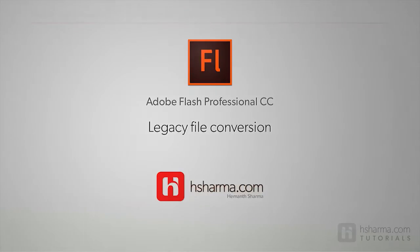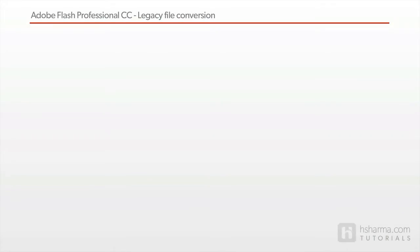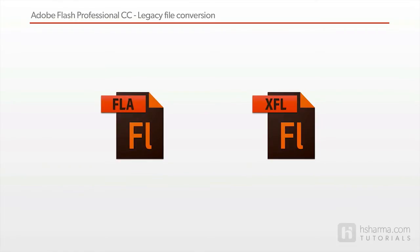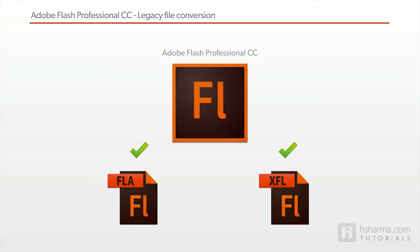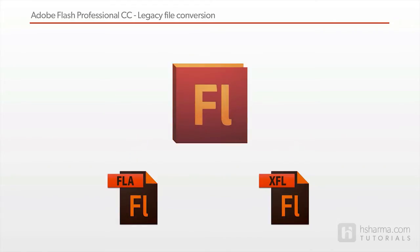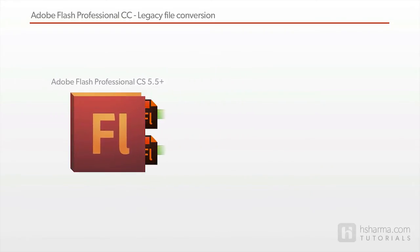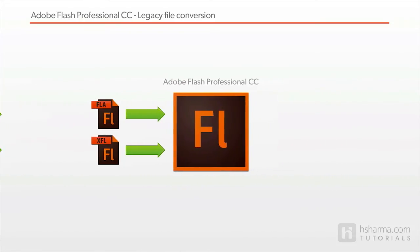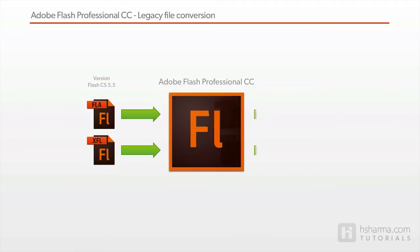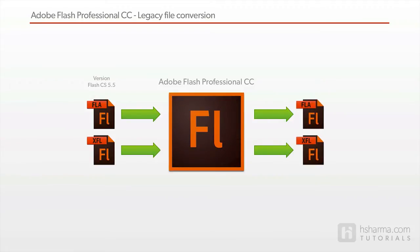The two types of files we are talking about here are the FLA and XFL files. As Flash Pro CC continues to support both the formats, it is important to understand how it handles the files saved using the older versions of the authoring tool. Because of the backward compatibility, Flash Pro CC does open the older FLA and XFL file types, but once you open it and save it back using Flash Pro CC, it stamps the files with the latest version.